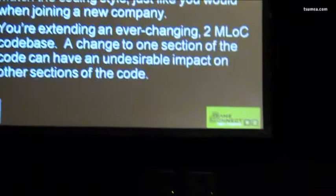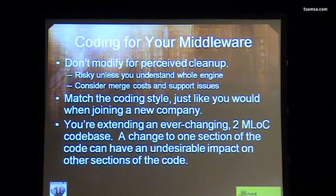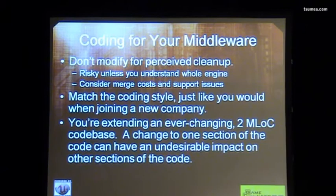You want to match your coding style with the style of the middleware you're licensing. Think of it like joining a new company: if you had coding style A but the whole company had coding style B, you would conform to style B. You'll be much more successful with the middleware product if you match your coding style to theirs — otherwise you're fighting the whole way, and it'll be an uphill battle. Go with the flow. Remember, you're extending an ever-changing two million lines of code — a living beast. If you start changing things in one spot, it may have undesired effects in another spot that you'd rather avoid.